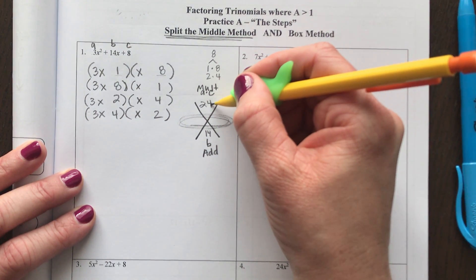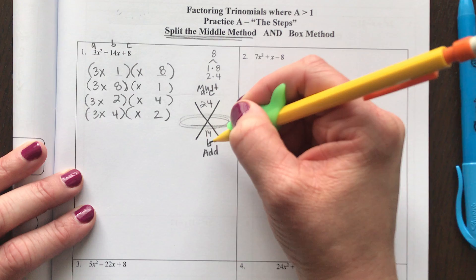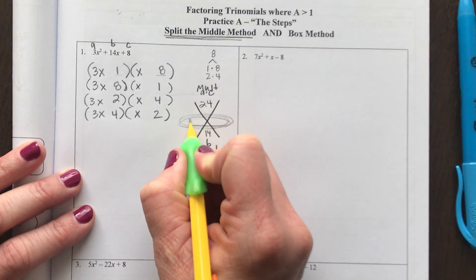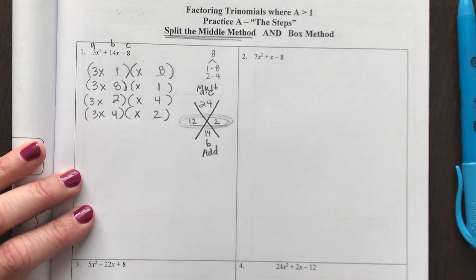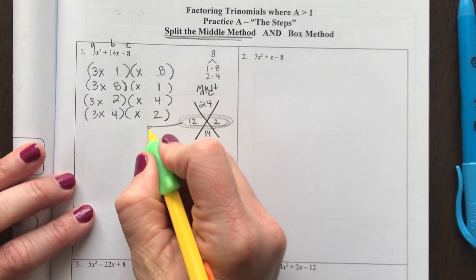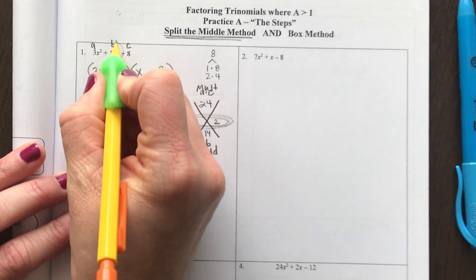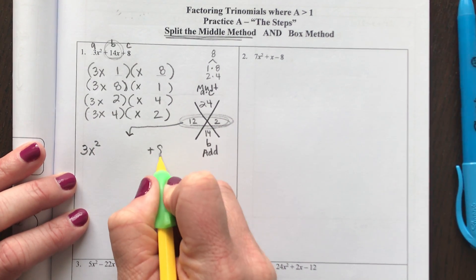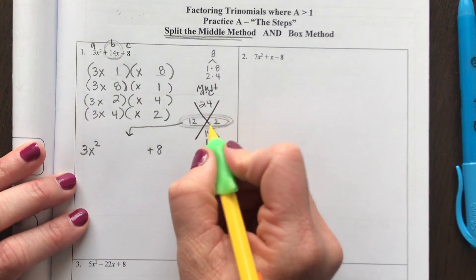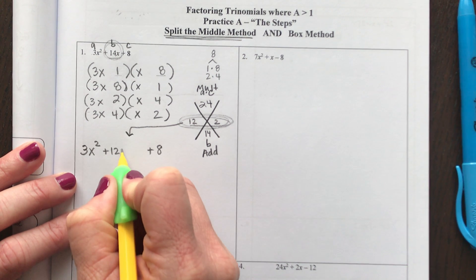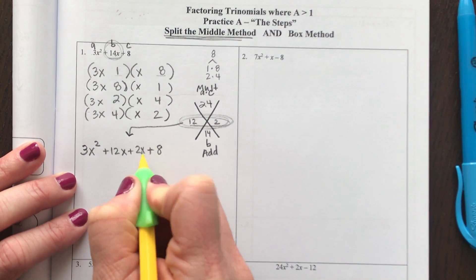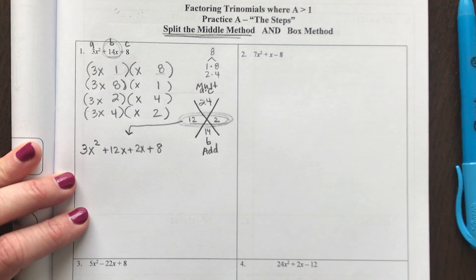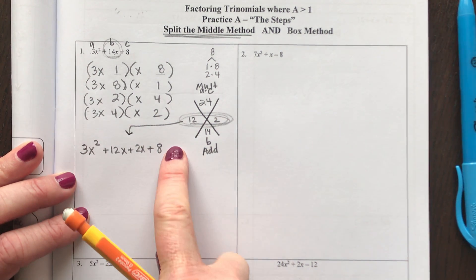So what multiplies to make 24 and at the same time adds to make 14? 12 and a 2. Now those two numbers we are going to split our middle term, the 14, up by. So my front term doesn't change and my last term doesn't change. But instead of writing 14, I'm going to write a 12x and a 2x.